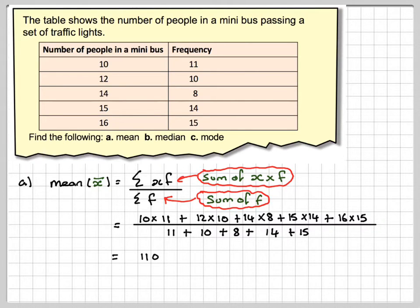So that's going to give me 110, plus 120, plus 112, plus 210, plus 240, divided by 58.